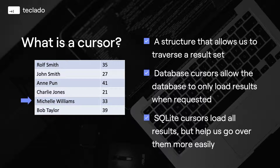So it's very important to distinguish between database cursors that are things in the RDBMS — which SQLite does not have, or at least we're not going to use them — that allow us to load results bit by bit so that we don't fetch the entire table, which could potentially be millions of rows at once. So there's a difference between that and the SQLite cursor, which is only there to help our code navigate the results. It doesn't do anything to help us avoid loading all the results at once.